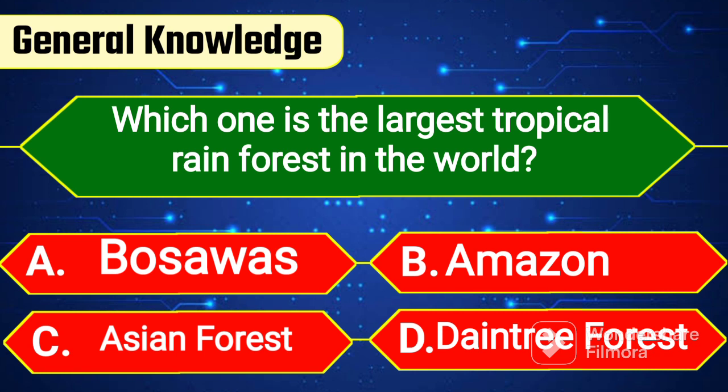Which one is the largest tropical rainforest in the world? Option A: Bosawas. Option B: Amazon. Option C: HM Forest. Option D: Daintree Forest.